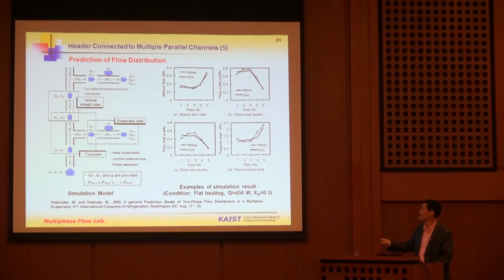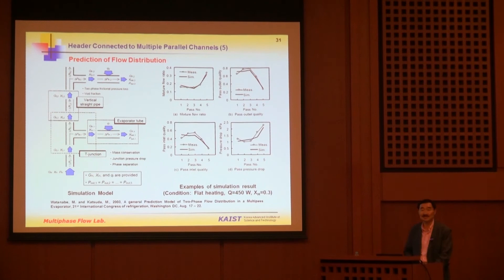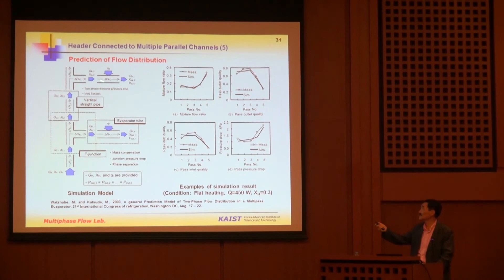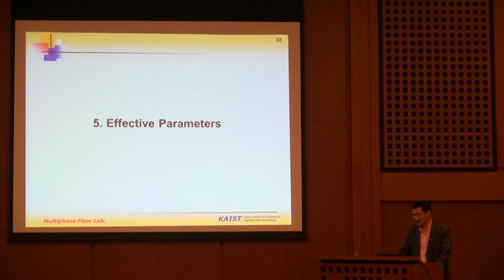Work by Watanabe shows that by modeling the T-junction, the pressure drop in the evaporator tube, and the straight pipe together, you can obtain the flow rate split to the branch quite reasonably. However, near the end plate, the pressure drop along the channel is usually quite large, so the role of the last junction is somewhat underestimated — which is why the model appears to fit well there.